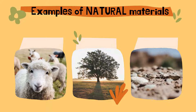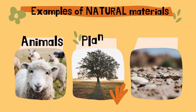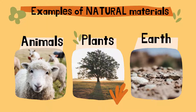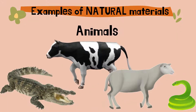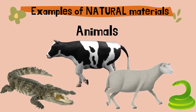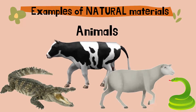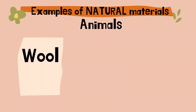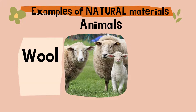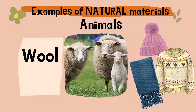Examples of natural materials: natural materials come from animals, plants, and from the earth, including non-living things from the ground. Let us start with materials that come from animals. The natural material that comes from animals — for example, wool. Wool is a natural material that comes from sheep. It is used to make woolen items like woolen sweaters and many other things.